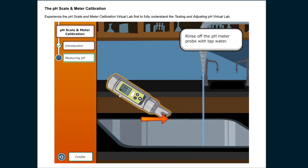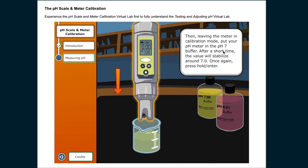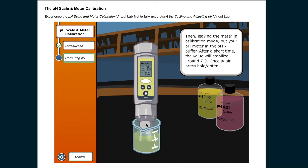Rinse the pH meter probe with tap water. Then, leaving the meter in calibration mode, put your pH meter in the pH 7 buffer. After a short time, the value will stabilize around 7.0. Once again, press hold enter.